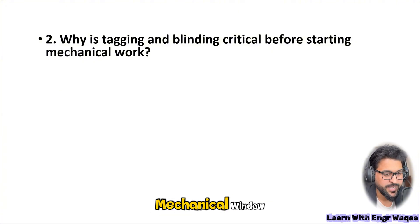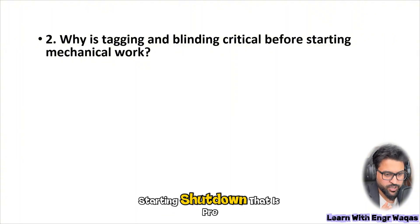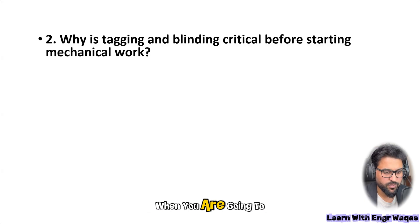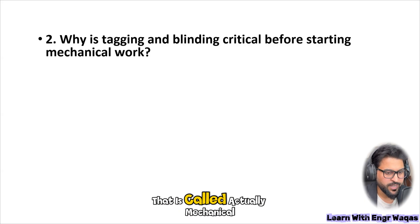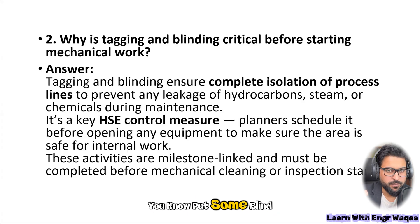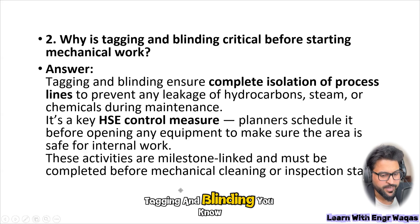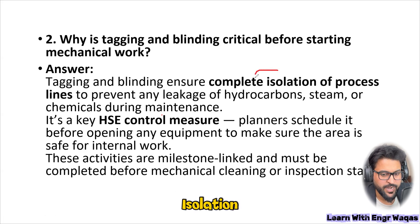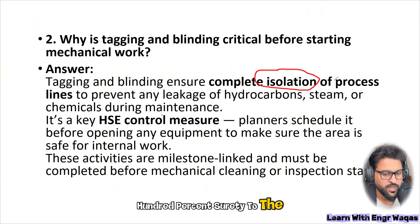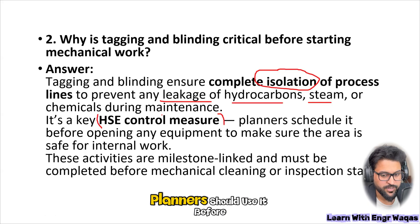The next question is: why is tagging and blinding critical before starting mechanical work? The mechanical window is where you start your maintenance work — that period between pre-shutdown and post-shutdown when equipment is opened. Blinding means placing a blind flange on the end of piping at equipment outlet and inlet slides. Tagging and blinding ensure complete isolation, which is 100% surety for process safety. It prevents leakage of hydrocarbons, steam, or chemicals during maintenance — it is a key HSE control. Planners schedule it before opening any equipment to make sure the area is safe.